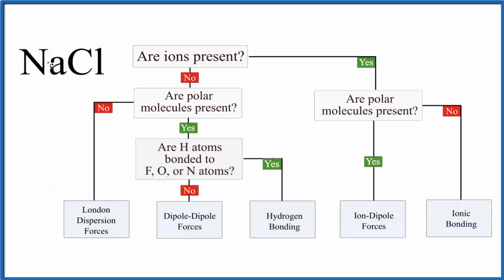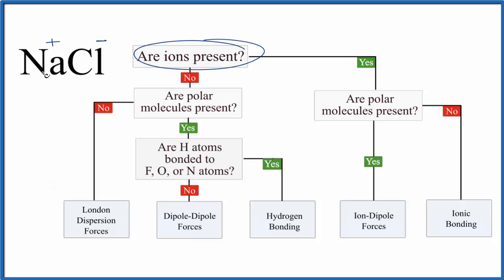There's a big difference in electronegativity between sodium and chlorine. Sodium therefore loses an electron and becomes positive. The chlorine gets that electron and becomes negative. So we do have ions present in NaCl.